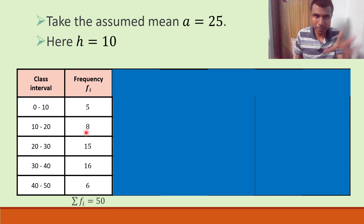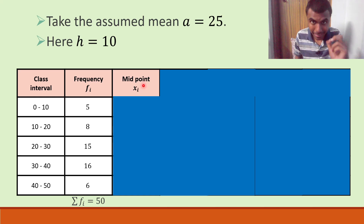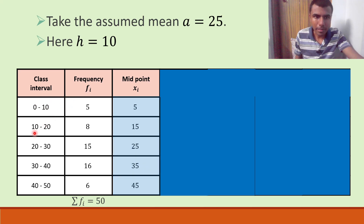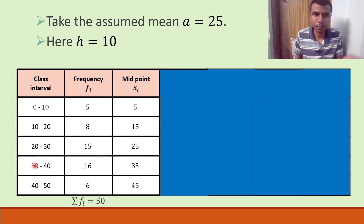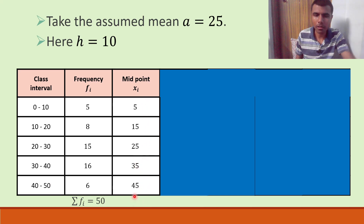Next we have to find out the midpoint of each class interval, which we denote as xi. What is the midpoint? For 0 to 10: 0 plus 10 by 2 equals 5. Likewise, 10 plus 20 by 2 is 15; 20 plus 30 by 2 is 25; 30 plus 40 by 2 is 35; 40 plus 50 by 2 is 45. So the midpoints are 5, 15, 25, 35, and 45.